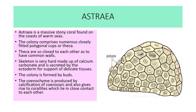Next example is Astrea. It is a massive stony coral found on the coast of warm seas. The colony comprises numerous closely fitted polygonal cups or thecae. The thecae are so close to each other as to have common walls. The skeleton is very hard, made up of calcium carbonate, and is secreted by the ectoderm for the support of the delicate tissues. The colony is formed by buds. The coenenchyme is produced by calcification of coenosarcs and gives rise to corallites lying in close contact with each other.